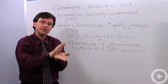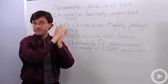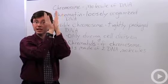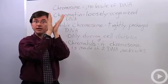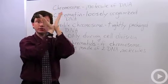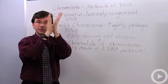So for one brief period of time, a chromosome, a visible chromosome, can be made out of two molecules of DNA. If that's the case, you call those two individual molecules a chromatid and a chromatid.